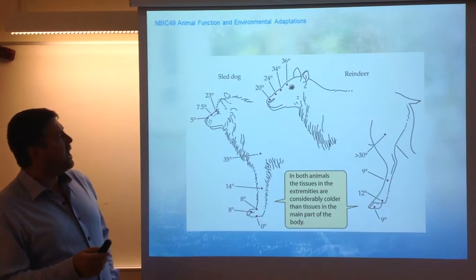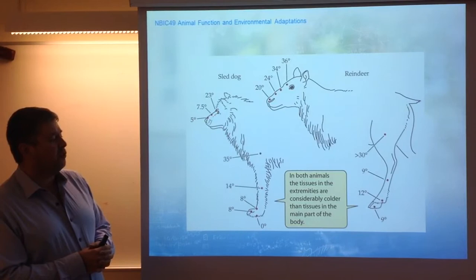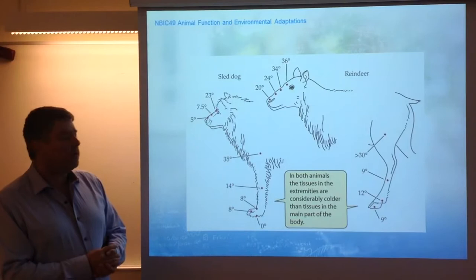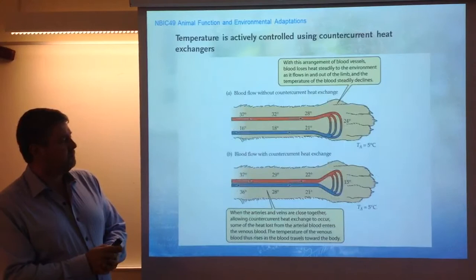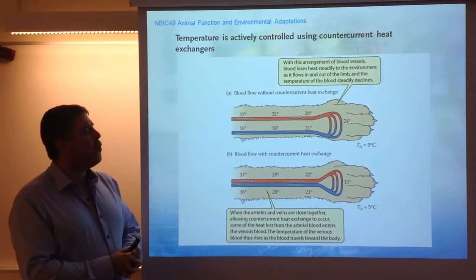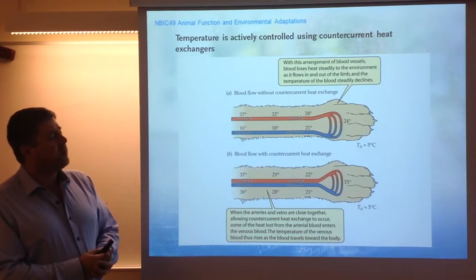Measurements done in sled dogs and reindeer, in different parts of the head, would give you many different types of temperatures. Going down the extremities in the legs of these animals, the paws that are in contact with the ground could reach zero degrees. So the temperature gradients are very large. Of course, in these extremities and paws, there are some control mechanisms that prevent losing too much heat into the environment.